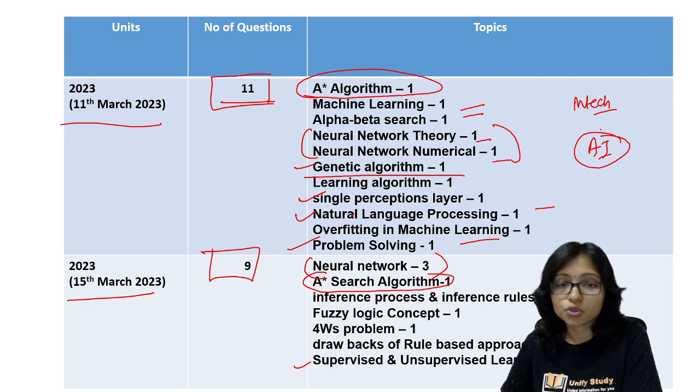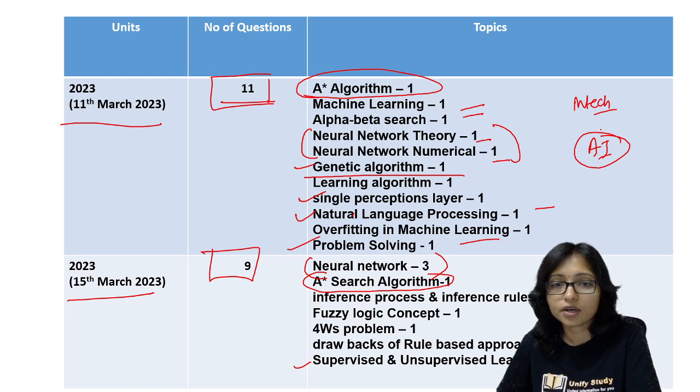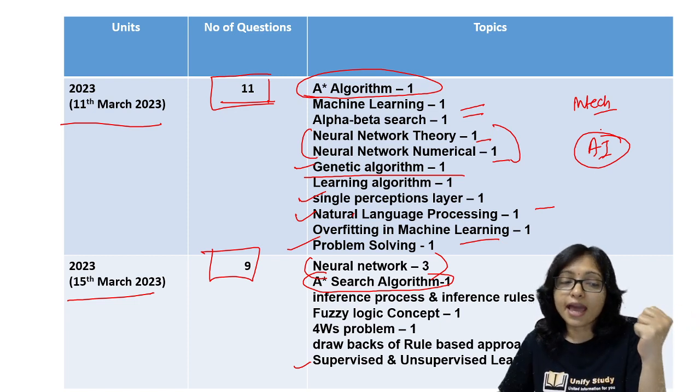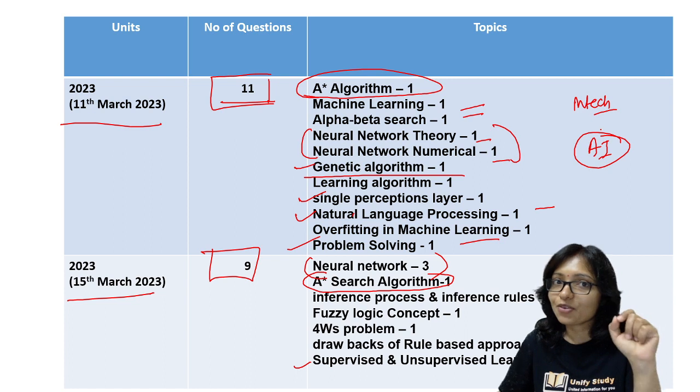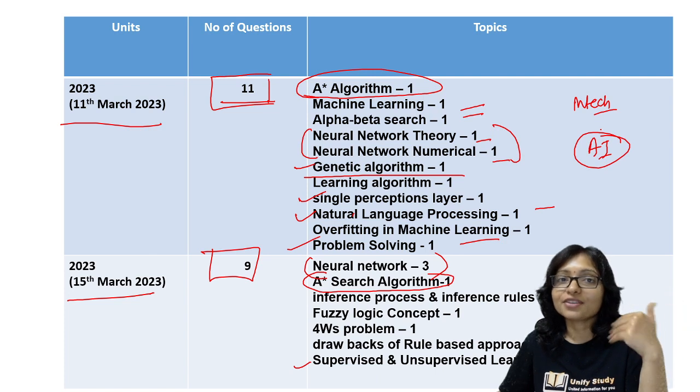The theoretical area and numericals are also not that much difficult: numericals are also easy - neural network numerical, genetic algorithm numerical, neural network numerical. So I am planning to start the AI series. If you are interested, let me know in the comment section. Then yes ma'am, we are interested. So that's why I will start soon.